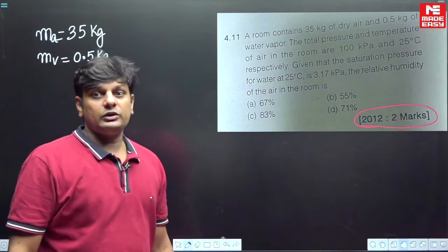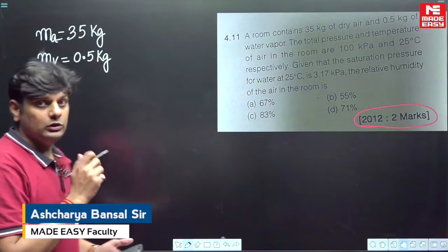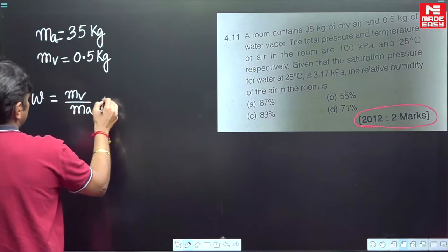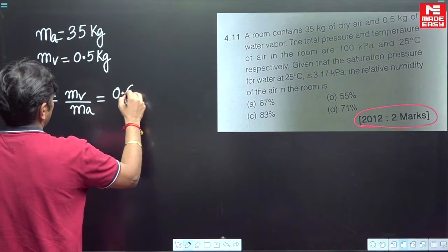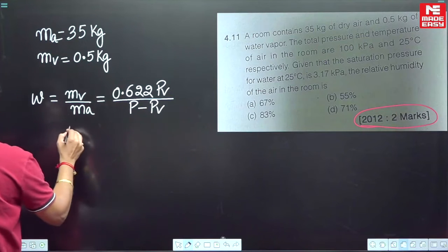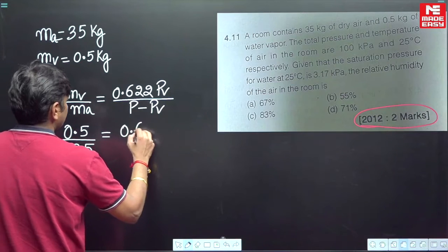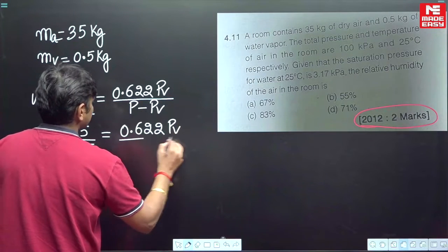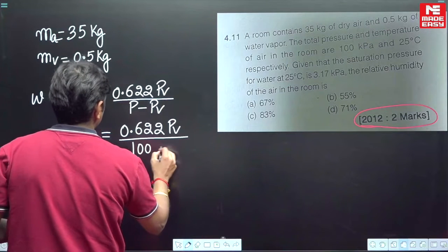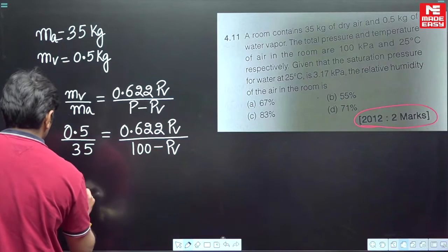This information relates to specific humidity, also called humidity ratio. The formula is: ω = mv / ma, which is also equal to 0.622 · pv / (p − pv). Here mv = 0.5 kg, ma = 35 kg. pv is unknown. The total pressure p is given in the question as 100 kPa, so it becomes 100 − pv in the denominator.